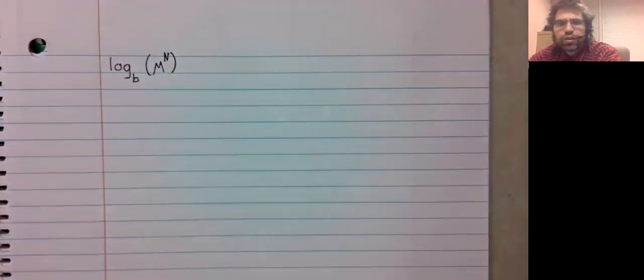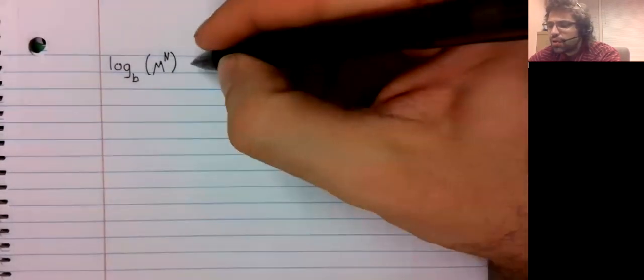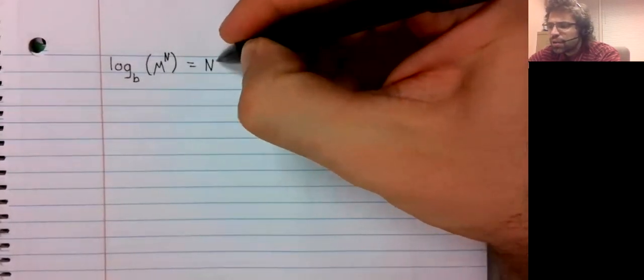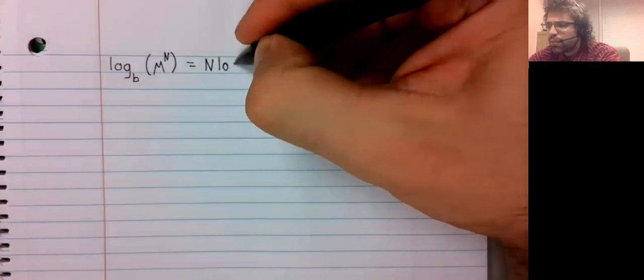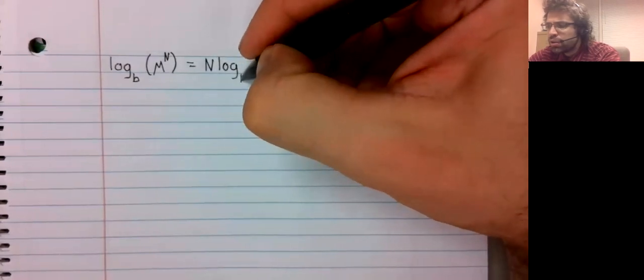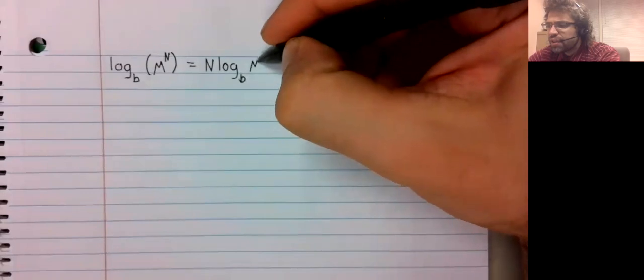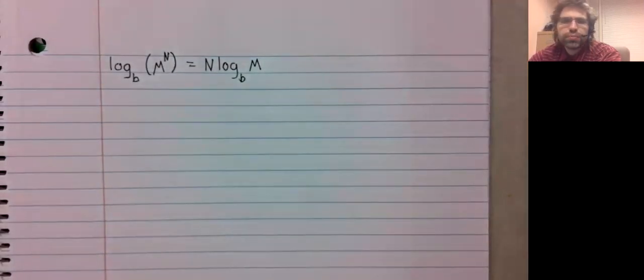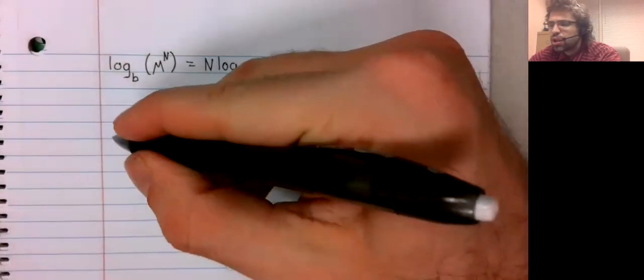The logarithm base b of a power takes the power down in front of the logarithm, like so.